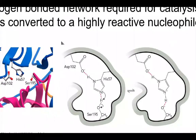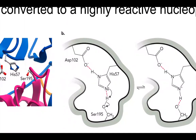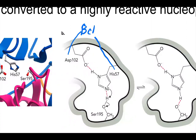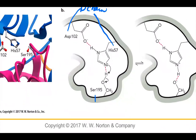If we zoom in on our stick model diagram of the amino acid residues important in this mechanism, you'll see the asparagine and histidine are from the B chain. Our serine is from the C chain. Serine-195 is our catalytic residue right here — this is what's going to form our enzyme-substrate covalent intermediate.